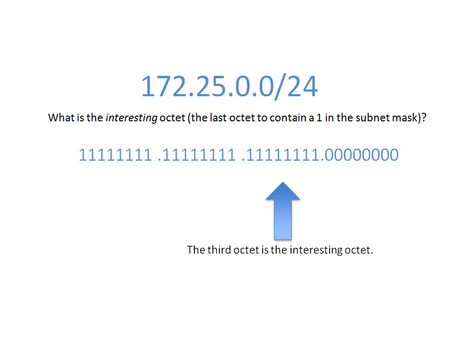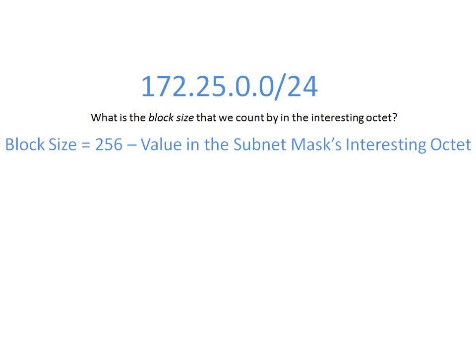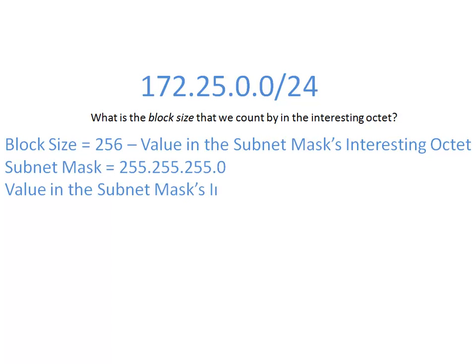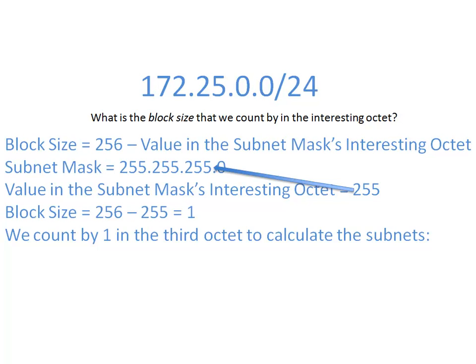That's step 1. Step 2: now that we know in which octet we're going to be counting, what is the block size? The block size can be calculated with this formula: it's 256 minus the value in the subnet mask's interesting octet — not the network address's interesting octet, but the subnet mask's interesting octet. In this case our mask is 255.255.255.0, so the value in the third octet is 255. The block size is therefore 256 minus 255, which equals 1. That tells us we're going to count by 1 in the third octet.